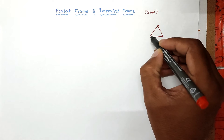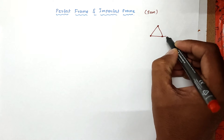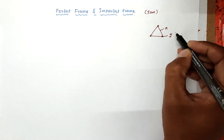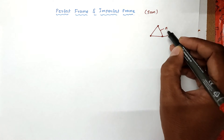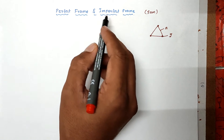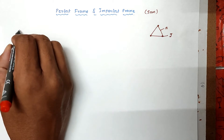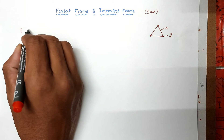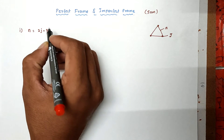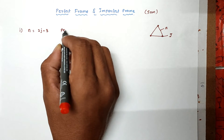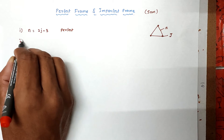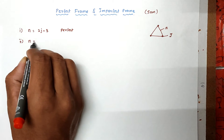There are joints and members in a frame. Joints are denoted as j and members are denoted as n. The condition for a perfect frame is n equal to 2j minus 3. Whenever this condition is satisfied, it is called a perfect frame. If this condition is not satisfied, it is called an imperfect frame.